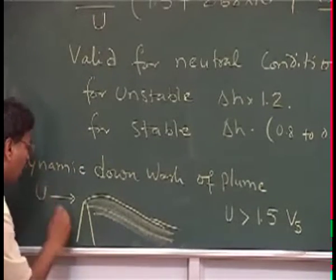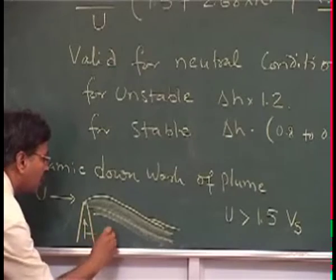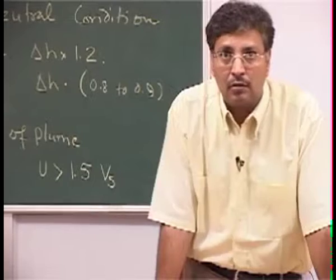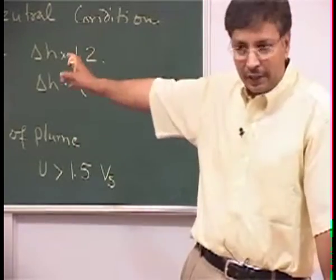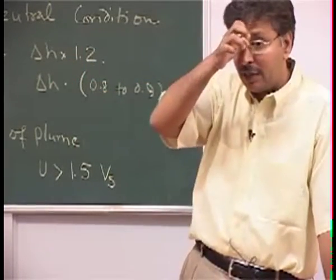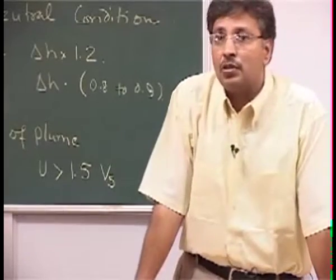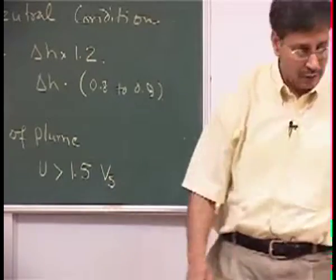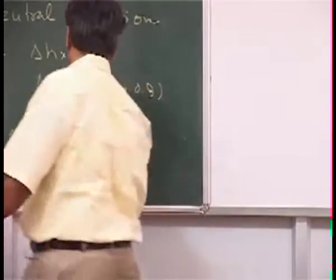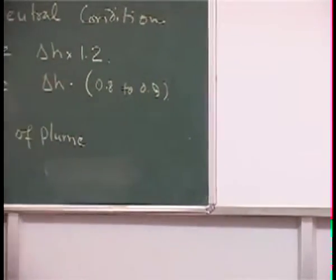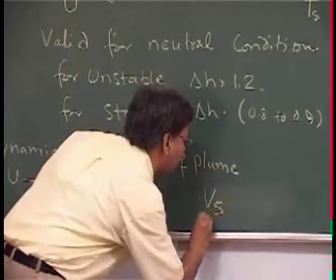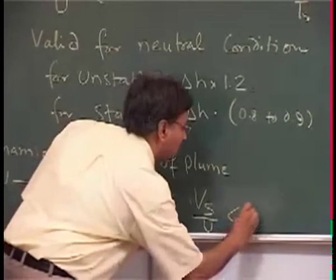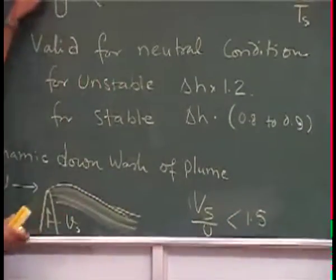Aerodynamic downwash happens when u is greater than 1.5 times V_s — the horizontal wind is too high compared to the exit velocity V_s. This is the u (horizontal wind) and the velocity inside the chimney is your V_s. One thing will be covered by the stability in that area, and in the coastal area suppose the wind is high. We should modify this and take the ratio of V_s by u — this should be corrected when V_s by u is less than 1.5.